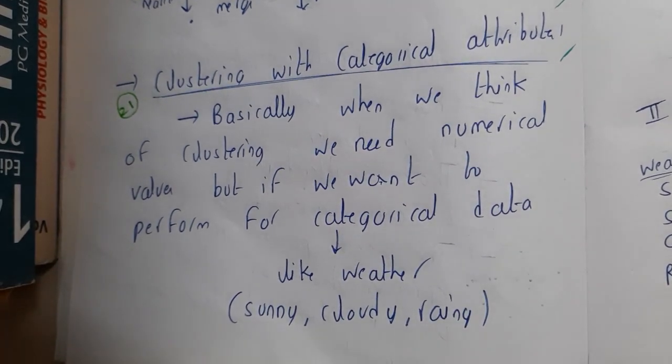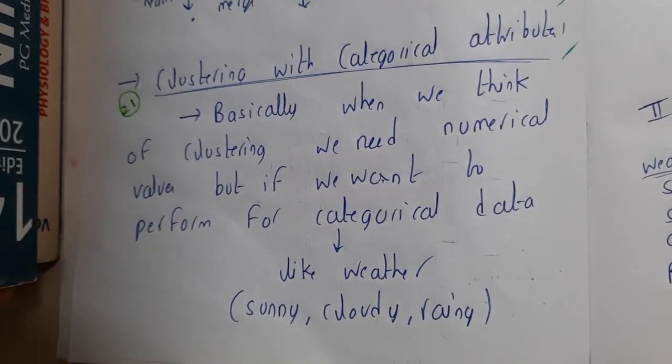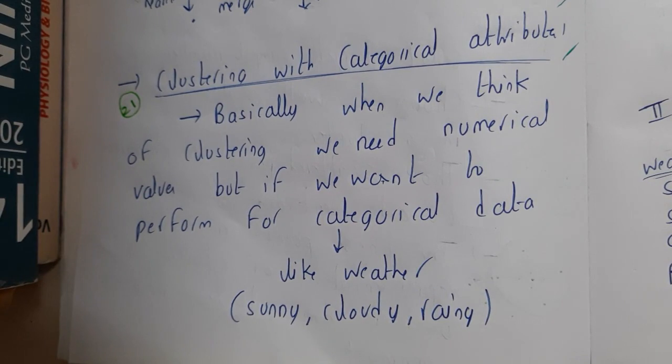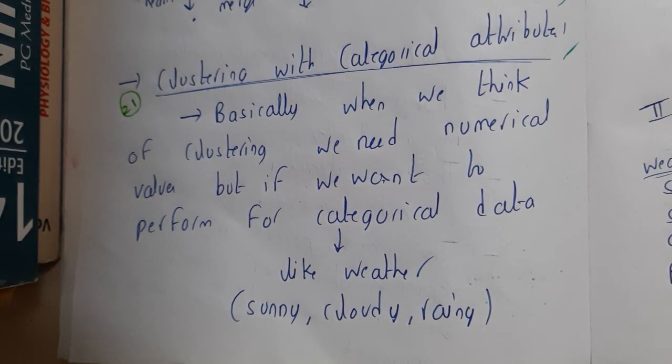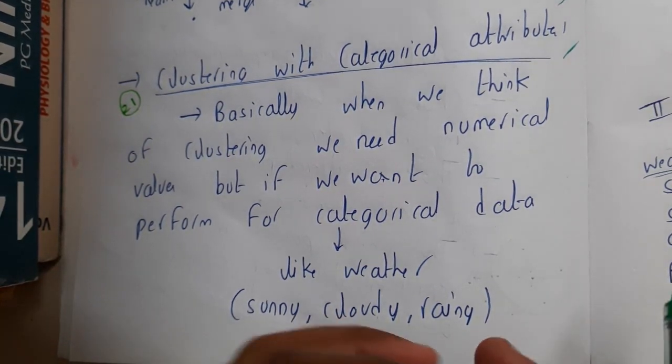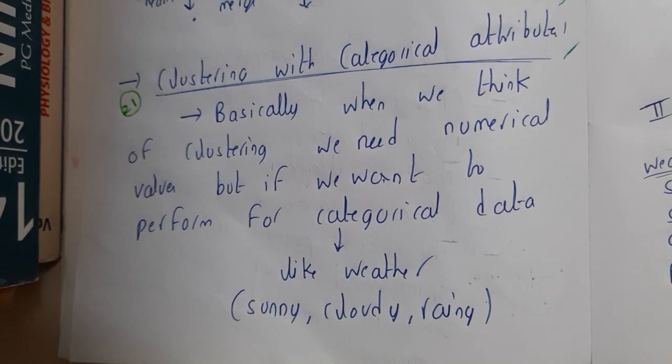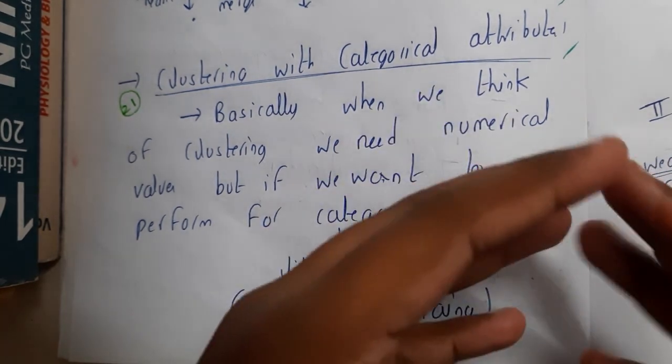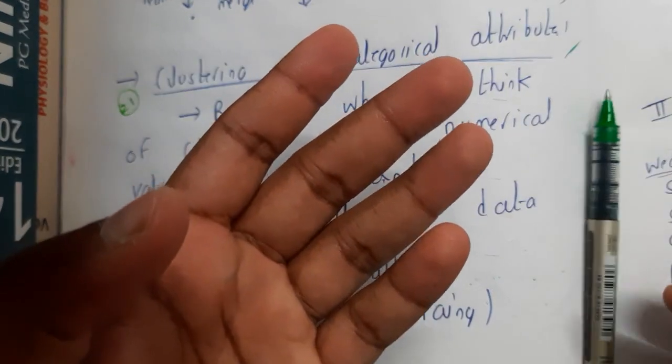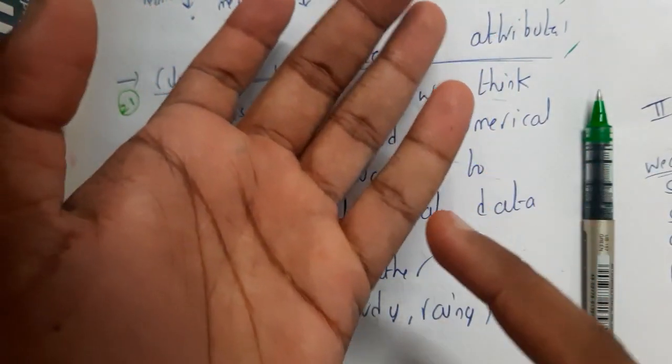Hello guys, we are back with our next lecture. In this lecture, let us go through clustering with categorical attributes. Basically, what are categorical attributes? Attributes which have various properties, like hair color—blonde, white, black, brown, pink, any kind of colors.